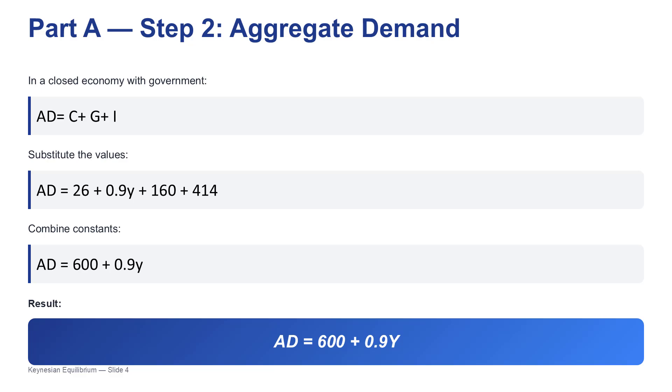And that new equation is our foundation. It tells us 26 million shekels of consumption happens no matter what, and then 90% of any income on top of that is also consumed. Now we can build our aggregate demand, or AD. For a closed economy with a government, it's just consumption plus investment plus government spending. C plus I plus G. So we just substitute in our new C function and the other numbers. That's 26 plus 0.9Y plus 414 for investment plus 160 for government spending. And adding up all those constant terms. The 26, the 414, and the 160 gives us 600. So our final AD function is nice and simple. AD equals 600 plus 0.9Y.